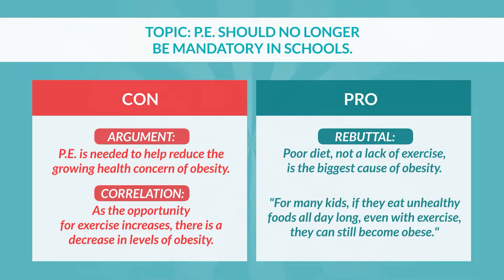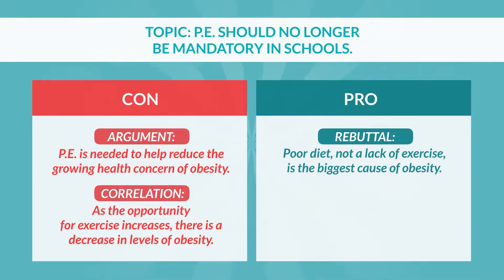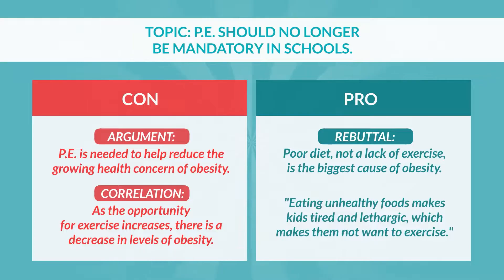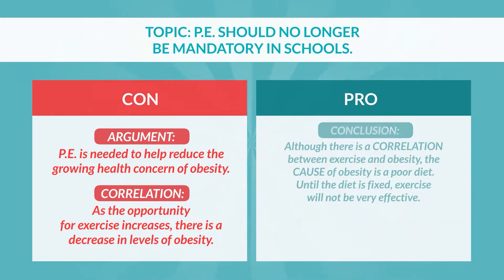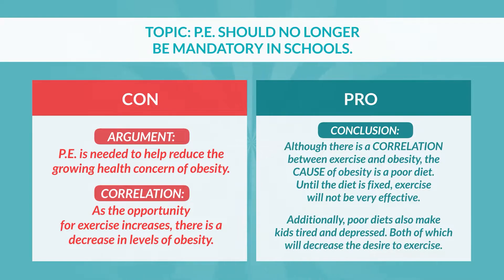They could say that for many kids, if they eat unhealthy foods all day long, even with exercise, they can still become obese. Furthermore, you could argue that eating unhealthy foods makes kids tired and lethargic, which makes them not want to exercise. Therefore, by changing their diets, kids will have more energy for exercise and will be motivated to exercise on their own. We could argue even further that too many kids are depressed these days — depression leads to a lack of interest in exercising and an increase in unhealthy eating, and that this is the leading cause of the obesity problem.